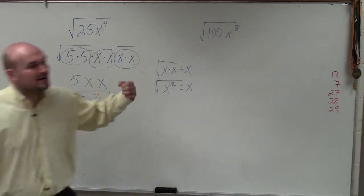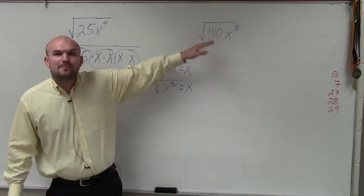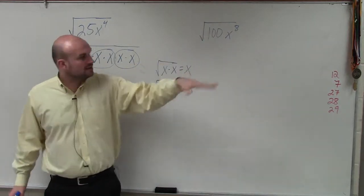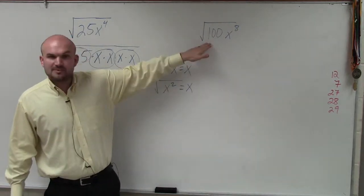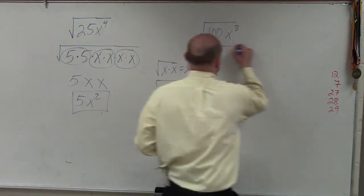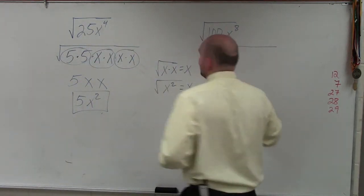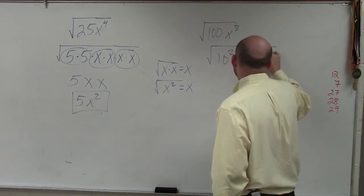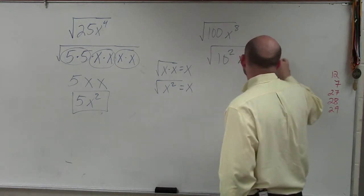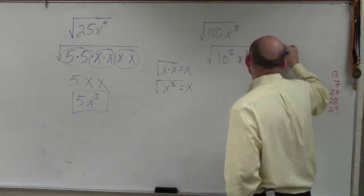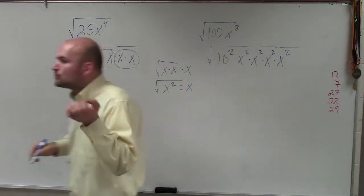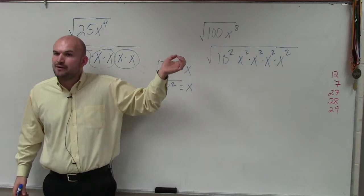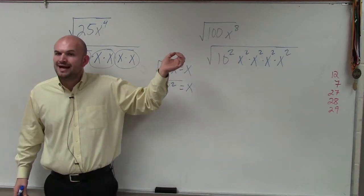So basically, what I want to do is see: can I represent 100 and x to the eighth as numbers squared? I can represent 100 as 10 squared. And x to the eighth, I can represent that as x squared times x squared times x squared times x squared. The rules of exponents state when you multiply exponents, you add the powers.